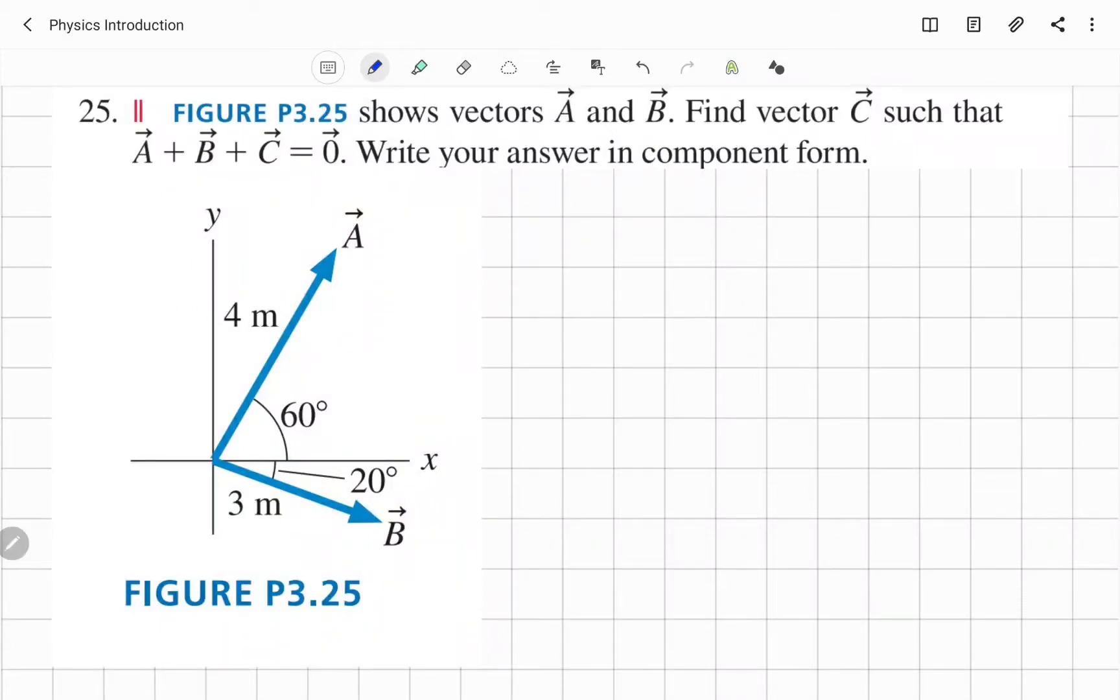Another problem for vectors. So we have three vectors A, B, C. A and B given as shown in this figure. We need to find C vector. But we know that summation, addition of all these three vectors equal to 0. This is what we know. So according to this information, we need to find C vector.